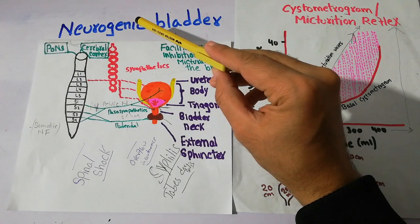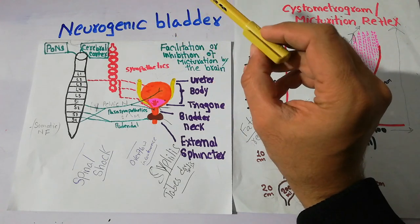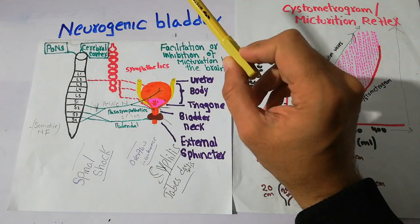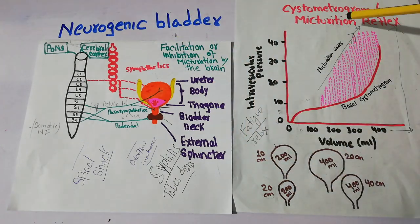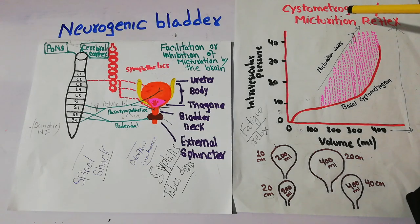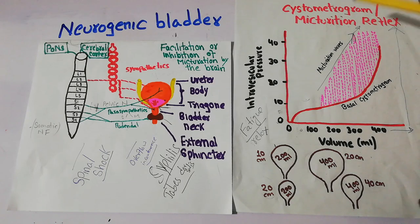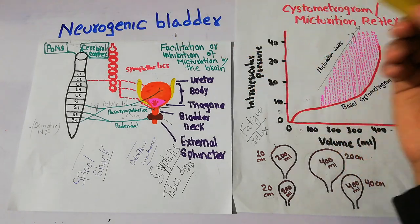To properly understand neurogenic bladder or uninhibited neurogenic bladder, we must know the micturition reflex. I have explained the micturition reflex multiple times in my previous lectures. If you are new to this channel, I will explain it quickly and then we will come back to the neurogenic bladder.